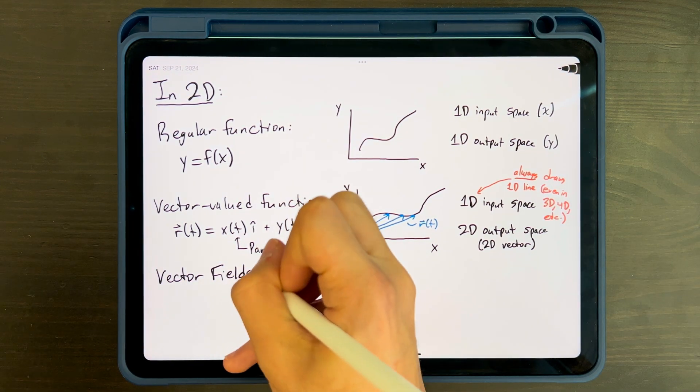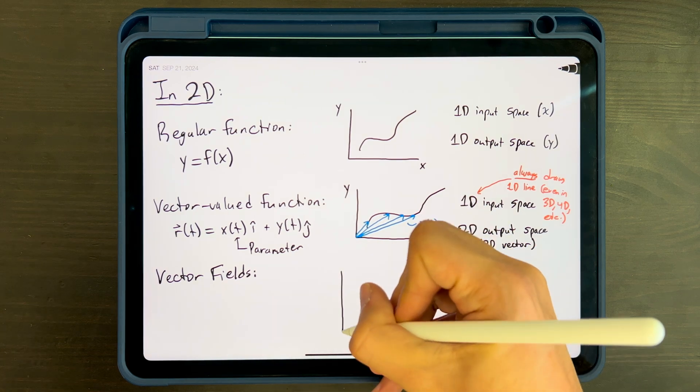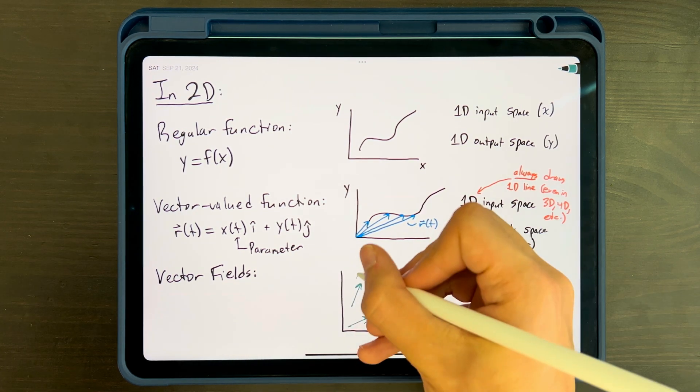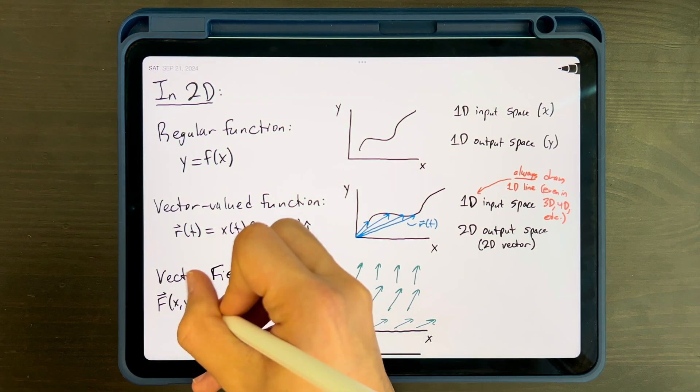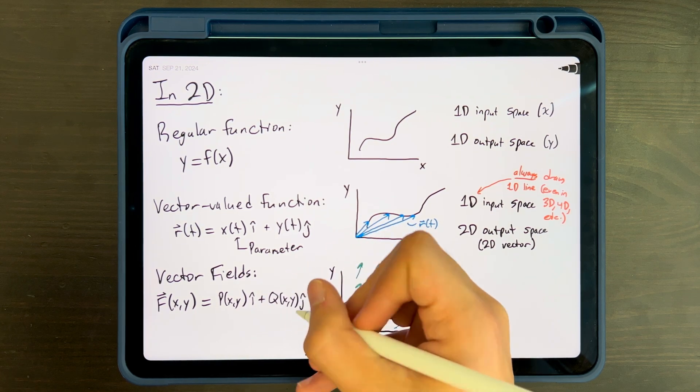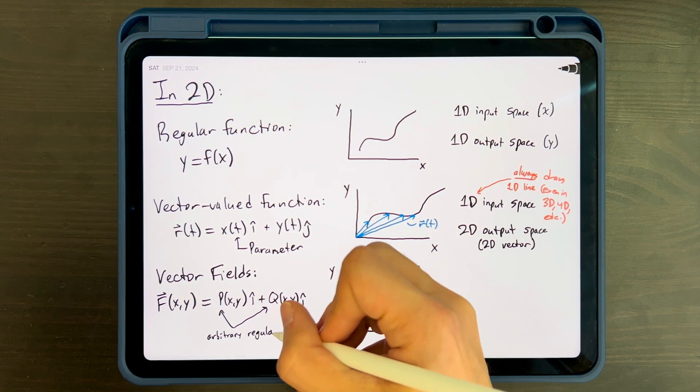Now vector fields, rather than outputting vectors that point to points on a curve, they output vectors to points in space. Let me clarify with a picture. Here's a vector field in 2D space. Notice that we're no longer drawing a curve. And here's how you write the equation for a 2D vector field.